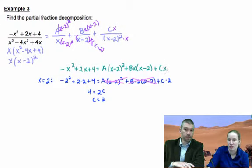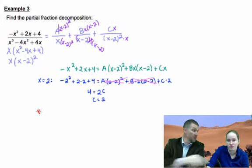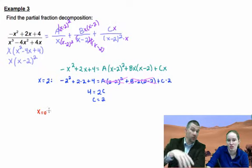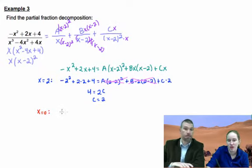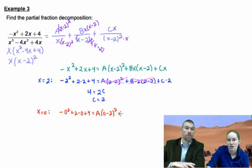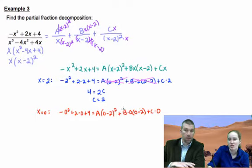Now there's another number that we can plug in that will be helpful to get rid of some things, and that's going to be zero. But now we know what C is, so we can actually put a two there if we want. It doesn't matter because two times zero will be zero.